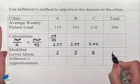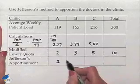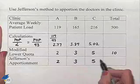Notice that this adds up to give us 10. And so we're going to end up having the apportionment in this manner for Jefferson.